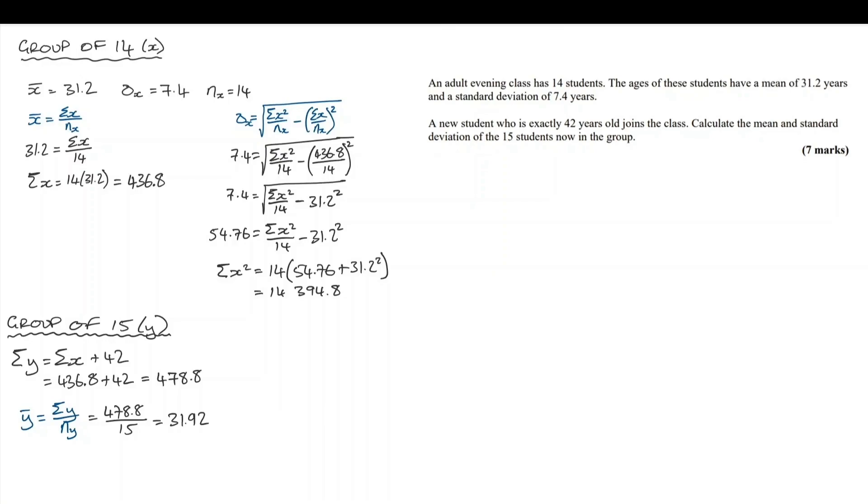Now that actually makes sense. My quick sense check is that this person that we've added to the group is older than the mean. So it should increase the mean. y bar equals 31.92.